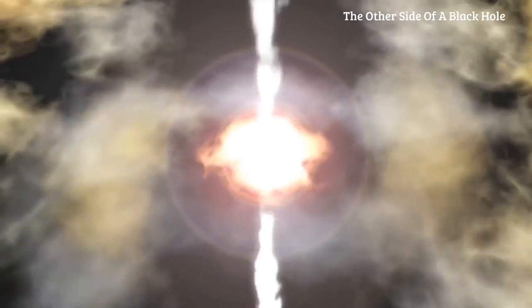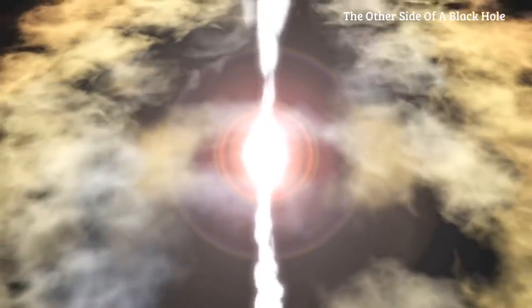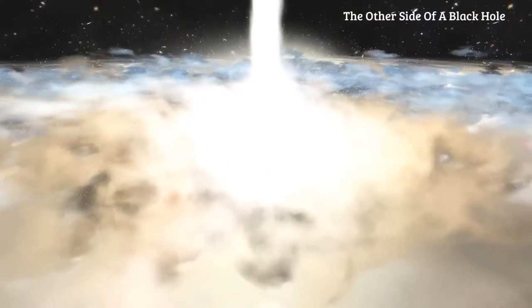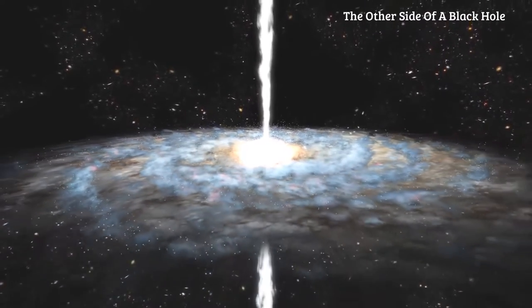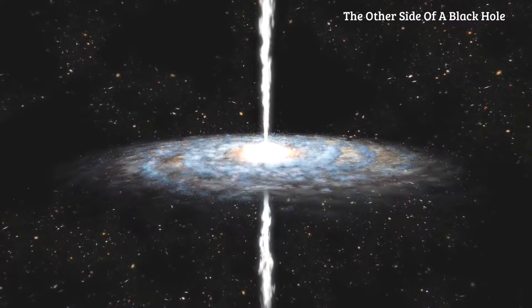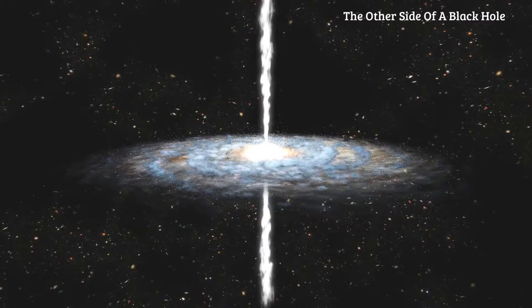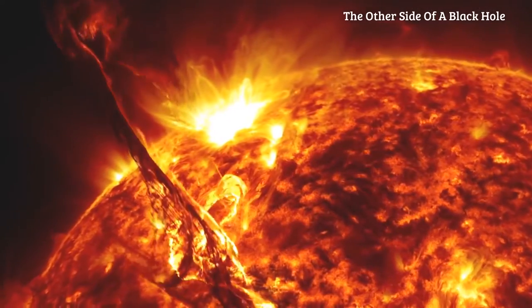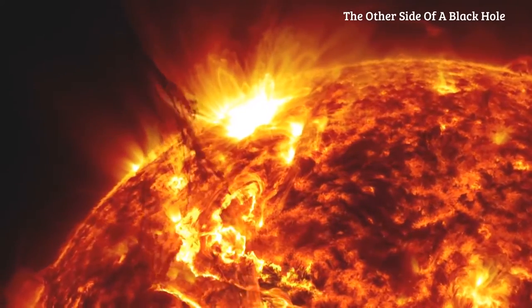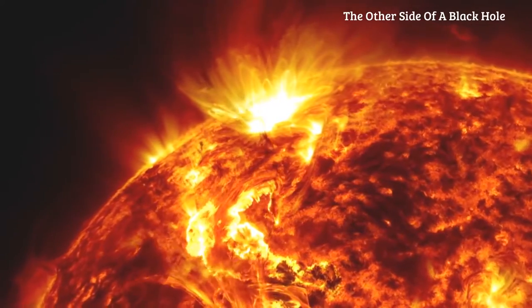Like rubber bands, these magnetic fields can stretch until the point where they snap, releasing massive amounts of energy and heating the gas to millions or even billions of degrees. You can see this in the magnetically active corona of our sun, where superheated gas shines very brightly in X-rays.